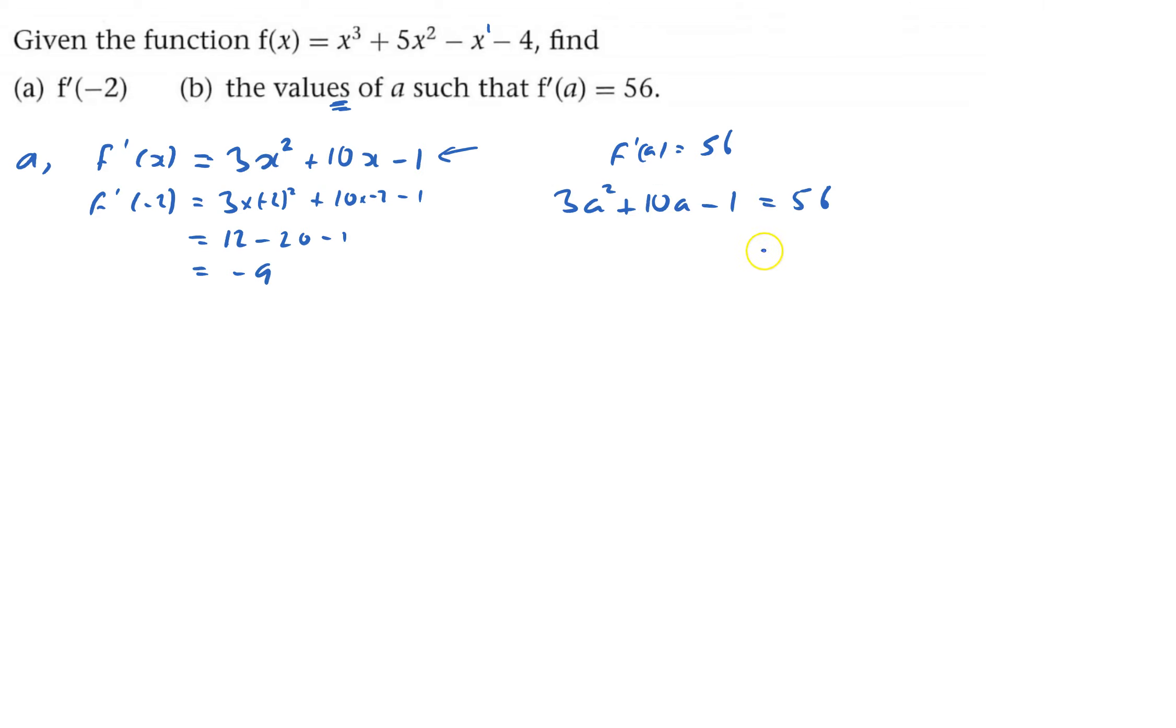Quadratic, getting equal to 0, so I'm going to take away 56 from both sides, so 3a² + 10a - 57 = 0.